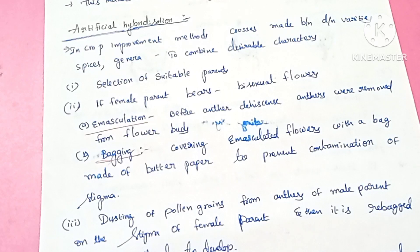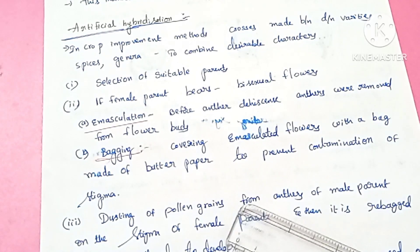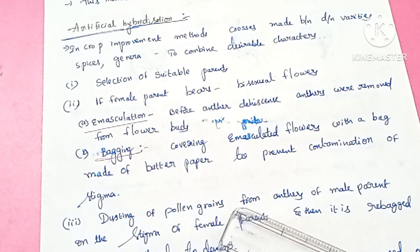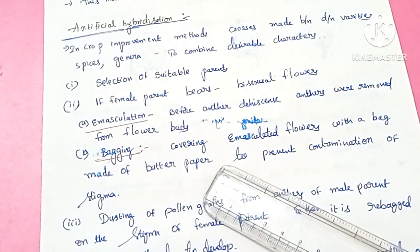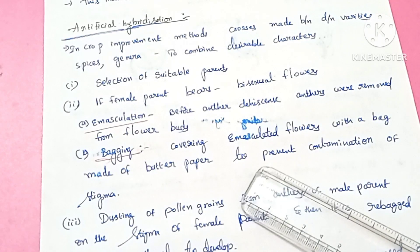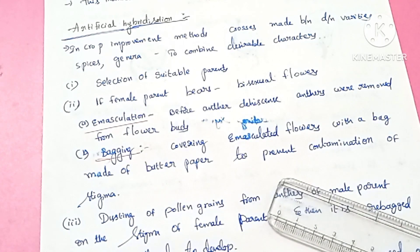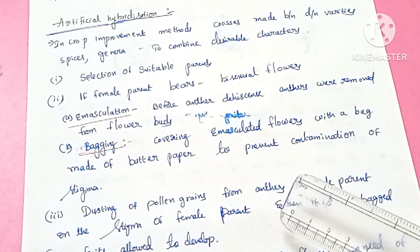After emasculation, we cover the emasculated flowers with bags made of butter paper. This covering of the emasculated flower with butter paper bags is called bagging. Bagging prevents unwanted pollination and contamination of the stigma by other pollen.